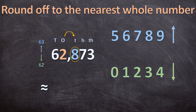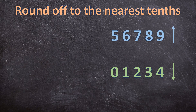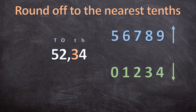So 62,873 rounded to the nearest whole number is 63 — remember your curvy equal sign. For the next question we need to round off 52,34 to the nearest tenths. The 3 is in the tenths place value, so it will either round up to 52,4 or round down to 52,3. We look at the digit to the right — the 4 in the hundredths place value. Since 4 is smaller than 5, it rounds down. So 52,34 rounded to the nearest tenths is 52,3.